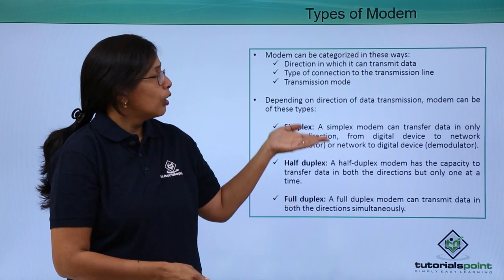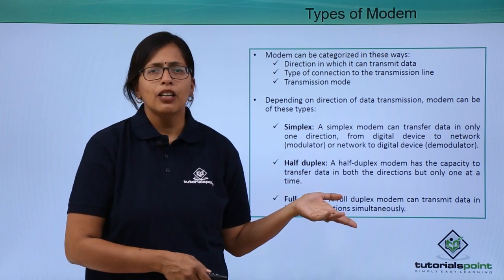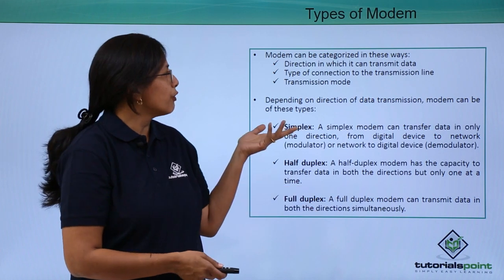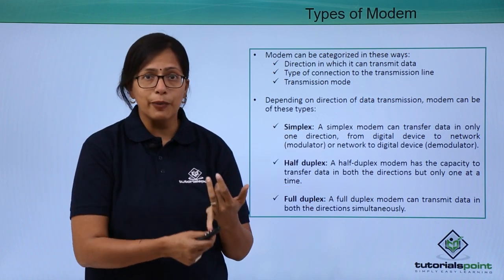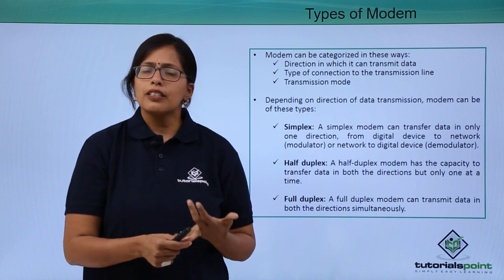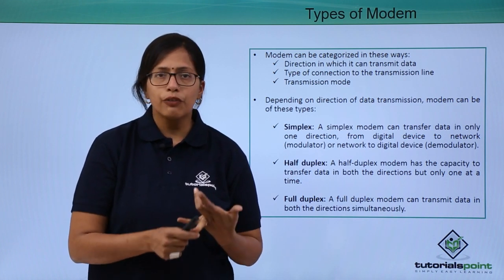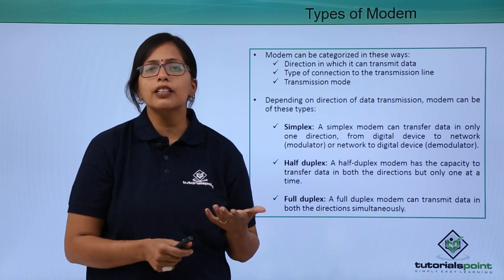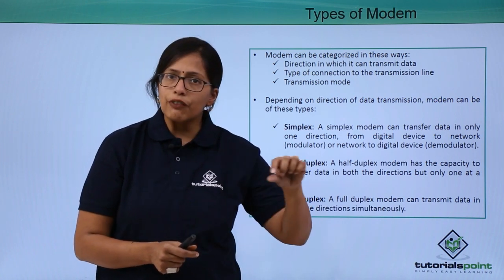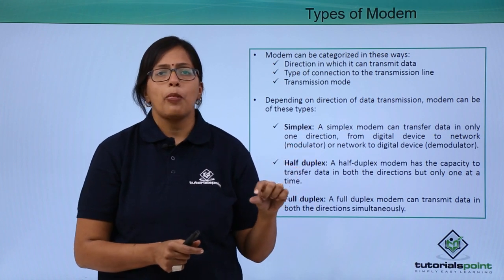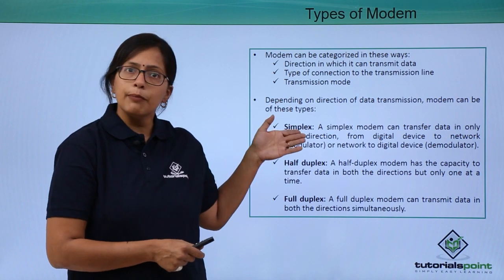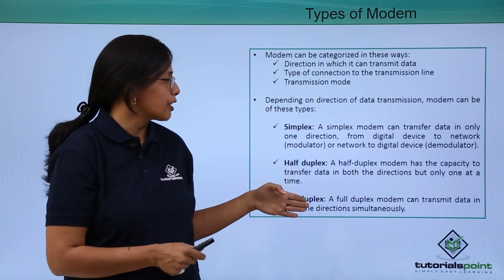Now let's see what the types of modems are. A modem can be categorized in different ways: by the direction in which it transmits data, the type of connection it uses, and the transmission mode. For this video, we will concern ourselves with the types of modem depending on the direction of data transfer. There are three types: simplex, half duplex, and full duplex.